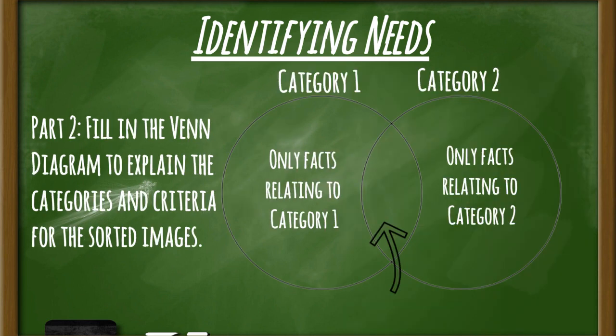After you've had time with your groups to identify two different categories, your teacher will give you insight at what are the golden secret categories that we were looking for. Once you find those out, you'll go into the next step of making your Venn diagram. Remember, a Venn diagram is a type of graphic organizer that helps us compare two different...